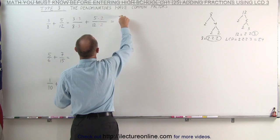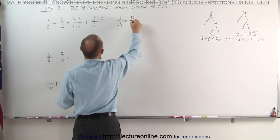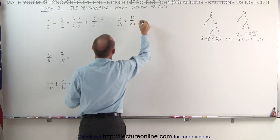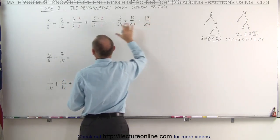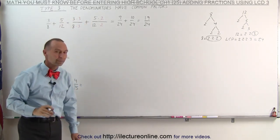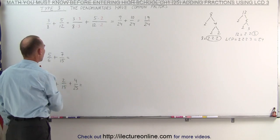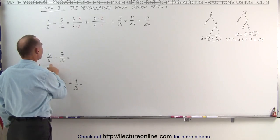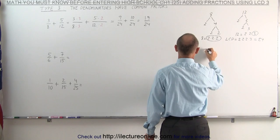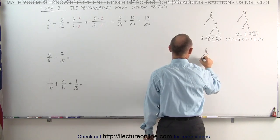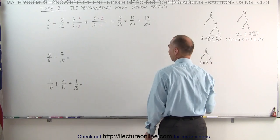On the second fraction, I can turn the denominator into 24 by multiplying it times 2, and of course I must do the same to the numerator. Now I have two fractions with the same denominator. The first fraction becomes 9 over 24, the second fraction becomes 10 over 24. When I add them together, I get 19 over 24, which is the sum of these two fractions.